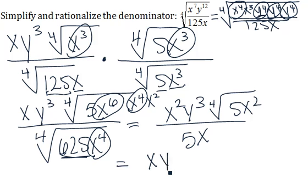So we'll be left with xy cubed times the fourth root of 5x squared, all over 5.